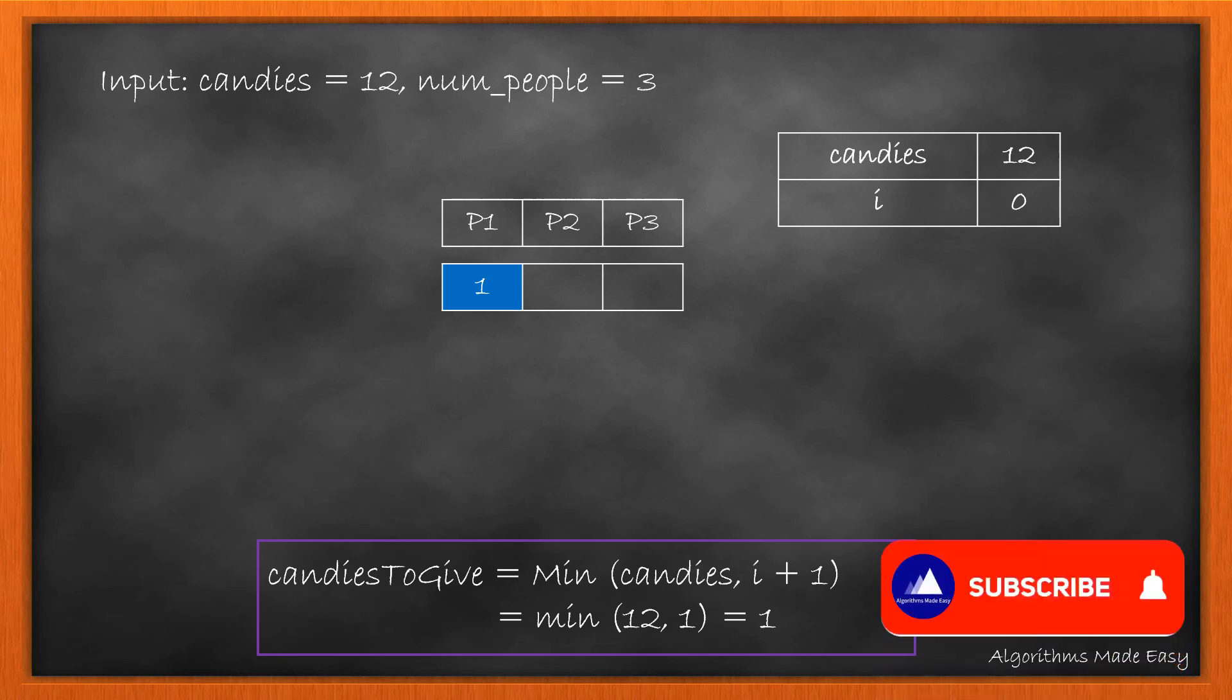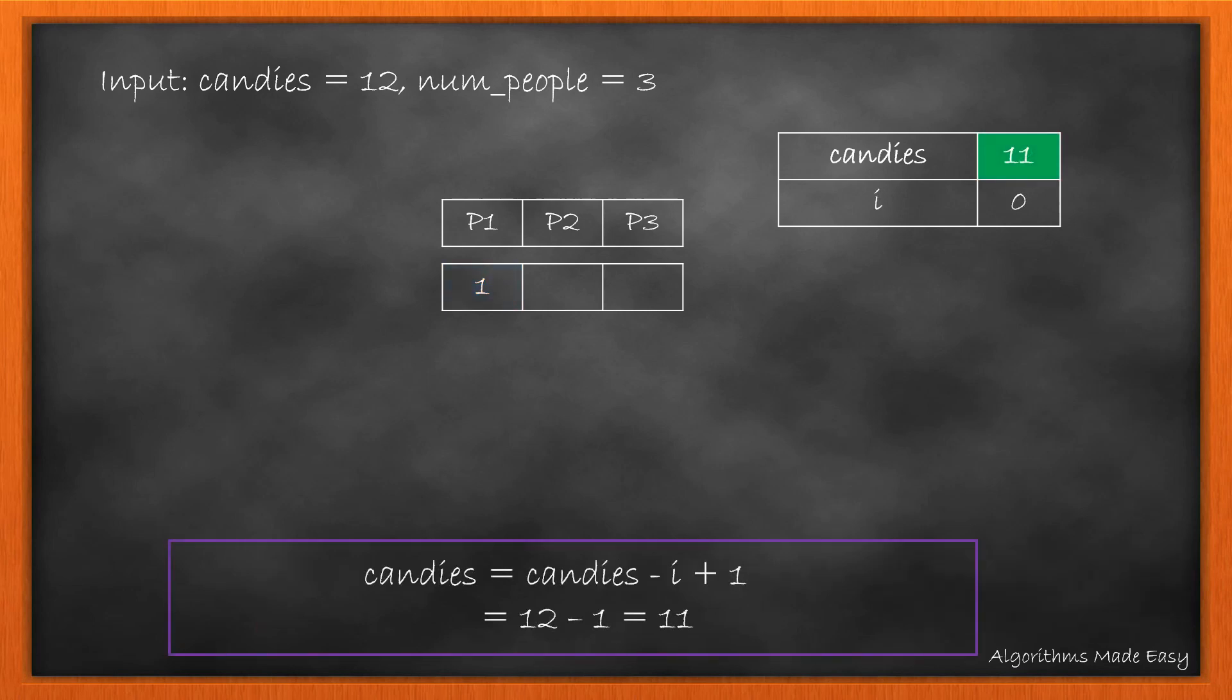If we write an equation for this, the number of candies we give equals the minimum of candies left or i+1. In this case, we give one candy to person 1. Once we've given the candies, we update the remaining candies: candies = candies - (i+1).